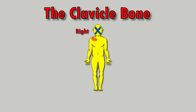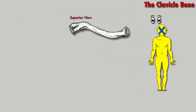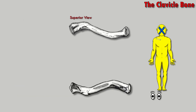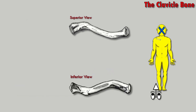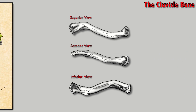We have a superior view on the top, which means you're looking at the bone from above. On the bottom we have an inferior view, which means you're looking at the bone from below. And an anterior view in the middle, which means you're looking straight ahead at the bone.